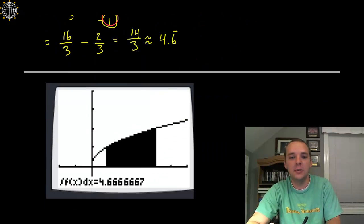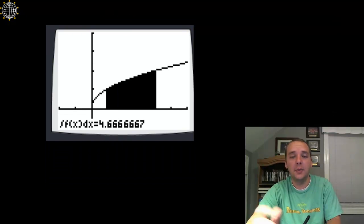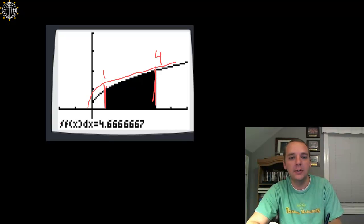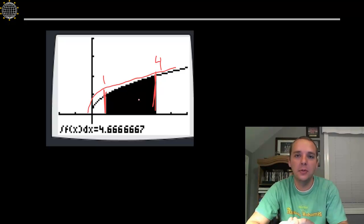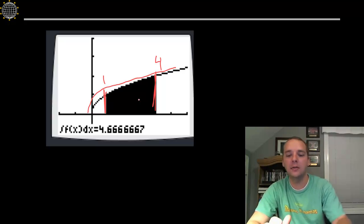Now just to convince you that this really is correct, I did this on my TI calculator right before I recorded this video. Here's the square root function right here, and the area from 1 to 4, you see this little integral symbol here, the area was 4.6 repeating. So we know it is correct, and you can see it here, this is a perfect area under the curve. So we'll do some harder examples in the next videos, but hopefully this gives you a good introduction to the fundamental theorem of calculus.